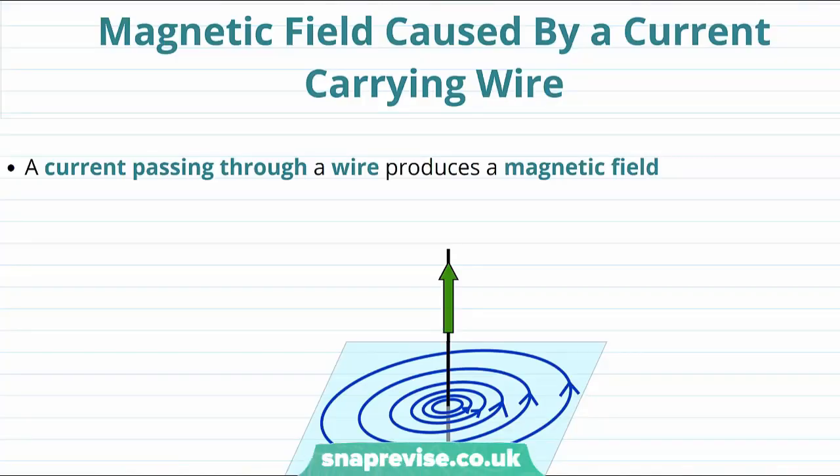Some of the ways in which we can create magnetic fields are actually quite surprising and they're not going to look like the familiar examples of bar magnets or fridge magnets that we're used to. In particular, it turns out that a current passing through a wire will produce a magnetic field.